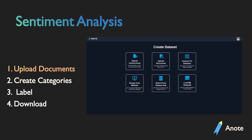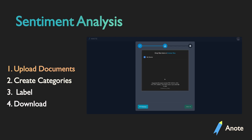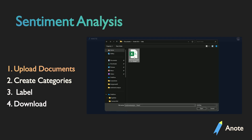First, click Upload Unstructured, then name your dataset with text classification and per line. After hitting Next, upload the document with data.